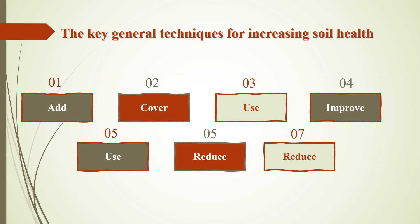The key general techniques for increasing soil health are: 1. Add sufficient organic matter to the soil through biomass residues and organic products such as animal manure and compost. 2. Cover the soil with live plants and crop residues. 3. Use other erosion-reducing methods. 4. Improve crop rotation. 5. Use optimum management practices to provide nutrients to plants and minimize water pollution. 6. Reduce the intensity of tillage. 7. Reduce the intensity of compaction.